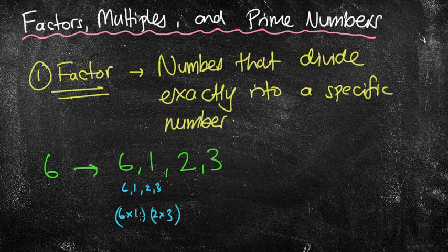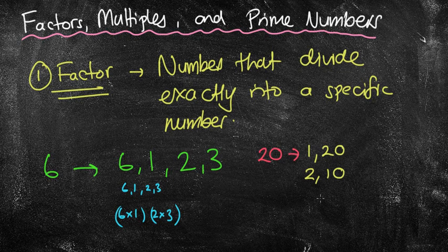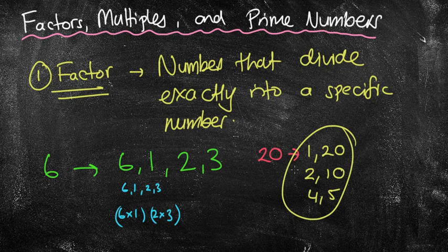Factors are numbers that divide exactly into a specific number. Can I ask you to pause this and write the factors of 20? Hopefully these are the factors you've written down: 1 and 20, 2 and 10, 4 and 5. There are 6 factors of 20.